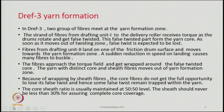In DREF 3, two groups of fibres meet at the yarn formation zone. One group is fed by drafting unit 1 — that is, by the pair of roller drafting rollers — and the other group is coming from the top, opened by the opening rollers, and then landing on the surface of the friction drum. The friction drums — a pair of drums — are the twisting element of the spinning machine. The friction drums are turning in the same direction, so that at the nip area the two surfaces move in opposite directions.